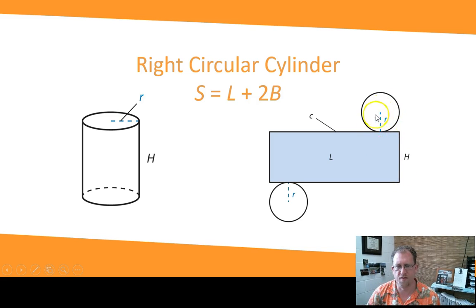And so the circumference of the circle is the one dimension of the big rectangle. The height is the other. Find the area of that rectangle. Find the area of the circle. There's two of them. Add it all together. Not hard stuff.